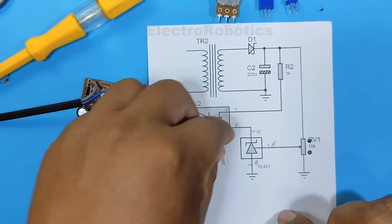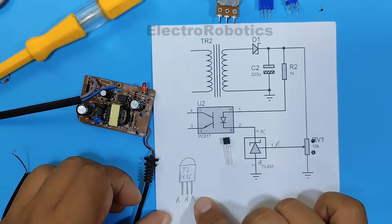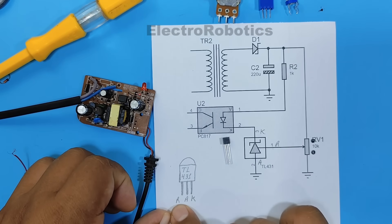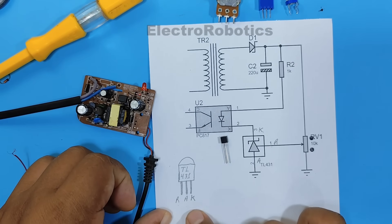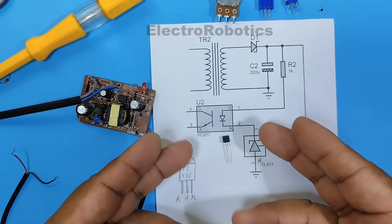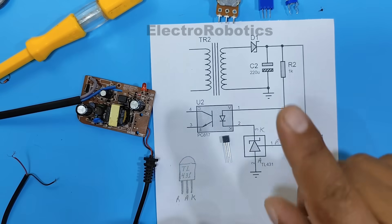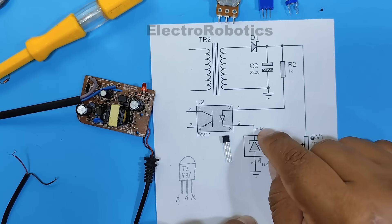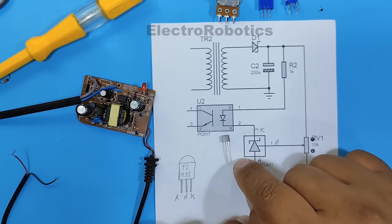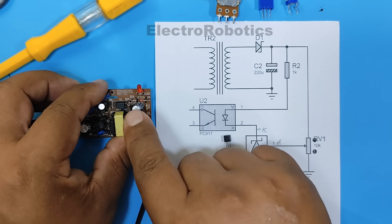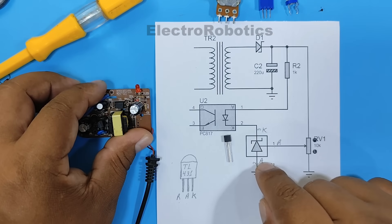This programmable diode has three terminals, reference, anode, and cathode, and their connections are quite simple. We have to connect the cathode of the TL431 to the cathode of the Zener, and the anode to the anode.